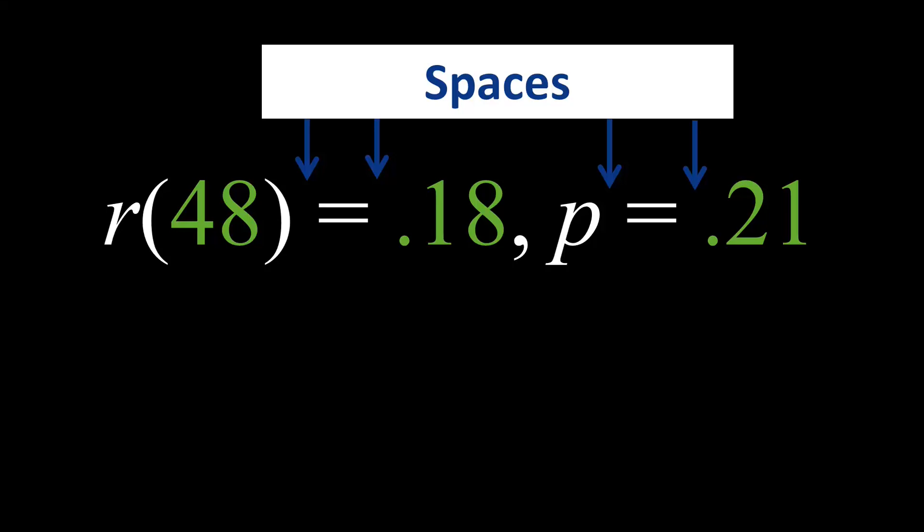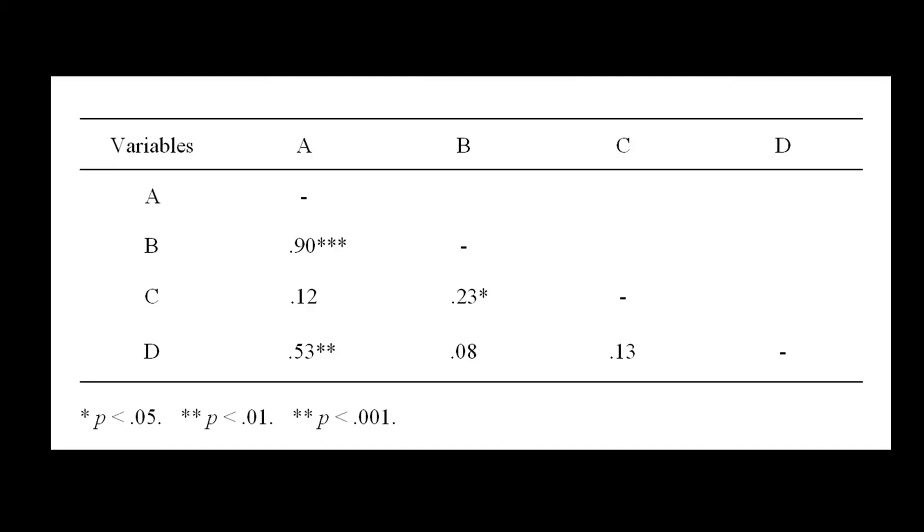Correlation results are often presented in a matrix like this one. Notice that a range of p values is provided along with asterisks so the readers understand the results.